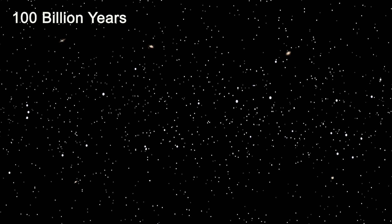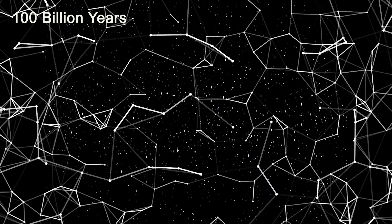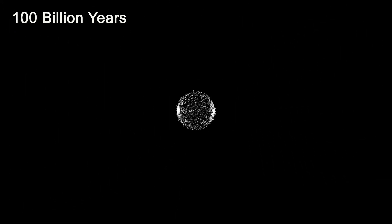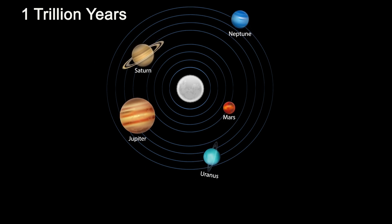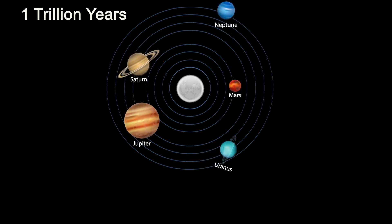By 100 billion years, the only galaxies visible from our solar system will be those that are gravitationally bound to our local group, which is over 54 galaxies out of the trillions that we can see now. Now, fast forward to about 1 trillion years. The white dwarf sun will finally cool to become a black dwarf.